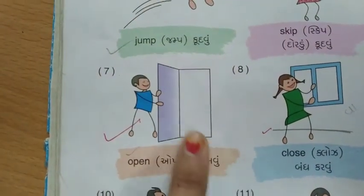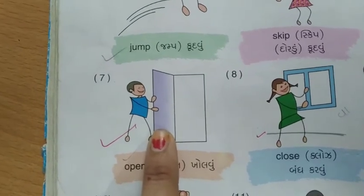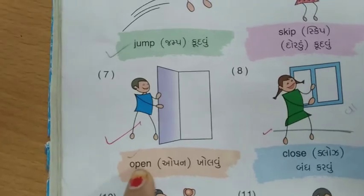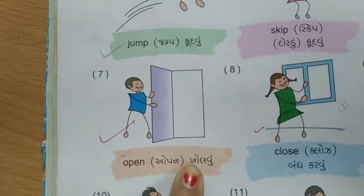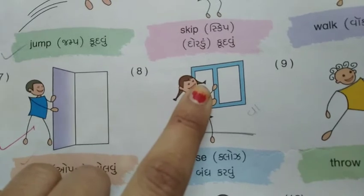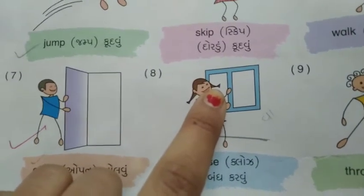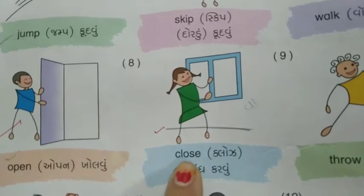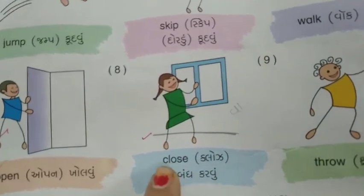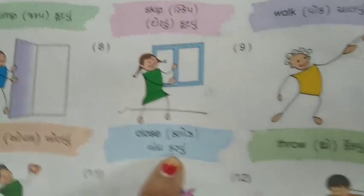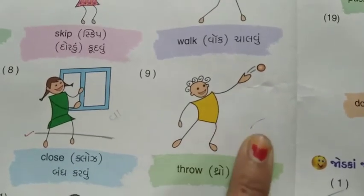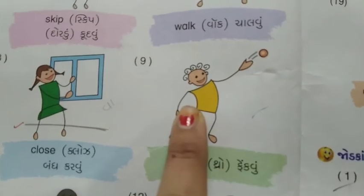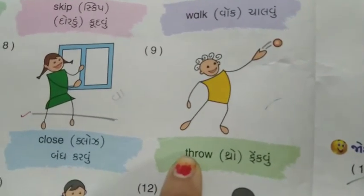આ ક્રિયા કરે છે, દરવાજો ખોલે છે, દરવાજો ખોલવાની એક્શન કરે છે, તો ખોલવુ એને કહેવાઈ OPEN - O-P-E-N. OPEN એટલે ખોલવુ. ત્યારબાદ બારી ફેંકે છે, ફેંકવુ એને કહેવાઈ THROW - T-H-O-W.